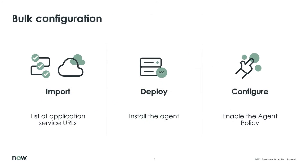The configuration of this is very simple — we're going to go through a demo. Generally you just need a list of the URLs that you want to monitor — these are the URLs for your application services. You need to make sure to deploy the agent, and then it's a very simple action to enable the policy so that monitoring can begin to take place.